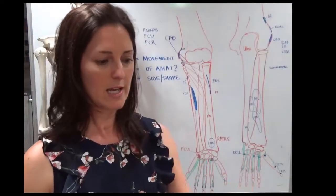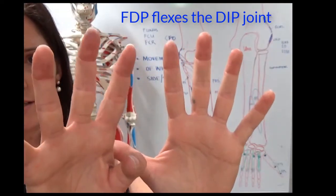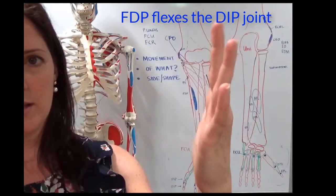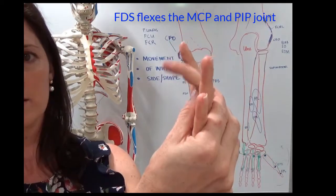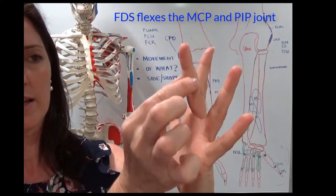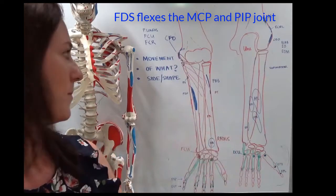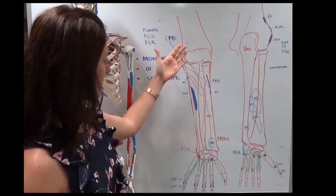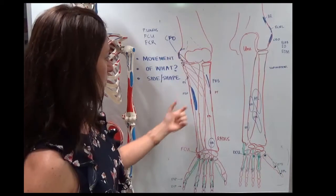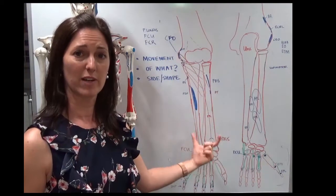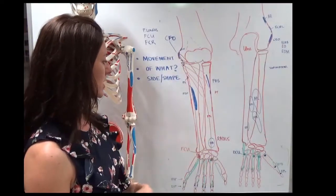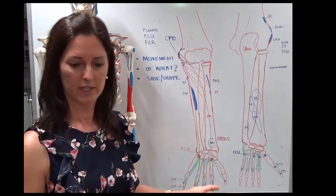So the two movements they produce, the profundus does this, which is a bit gross. And the superficialis does this. So it stops on that joint there. So I think we've got the pattern for the naming. So if it's on the outside, it's going to be a flexor carpi something. If it's in the middle, it's going to be a flexor digitorum.